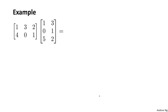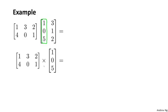Let's say I have two matrices and I want to multiply them together. The first thing I'm going to do is pull out the first column of the matrix on the right, and multiply the matrix on the left by that vector — the first column. It turns out if I do that I get the vector 11, 9. This is the same matrix-vector multiplication as in the last video.